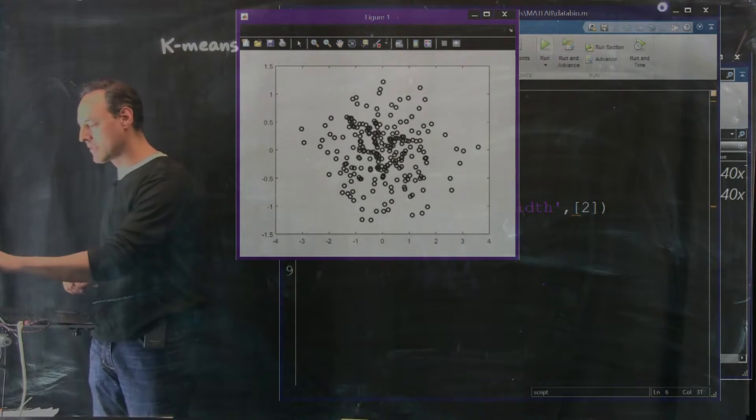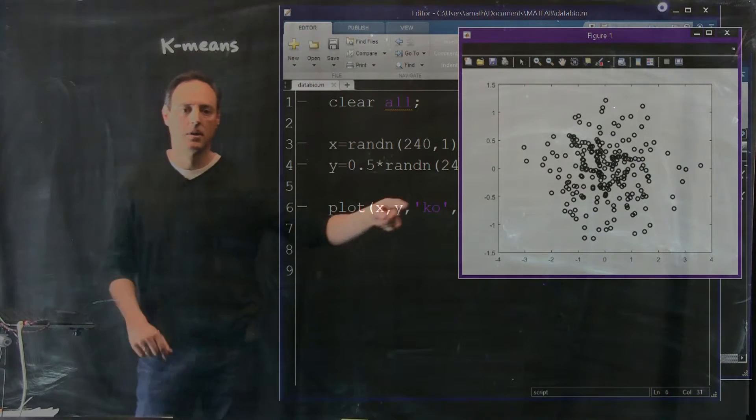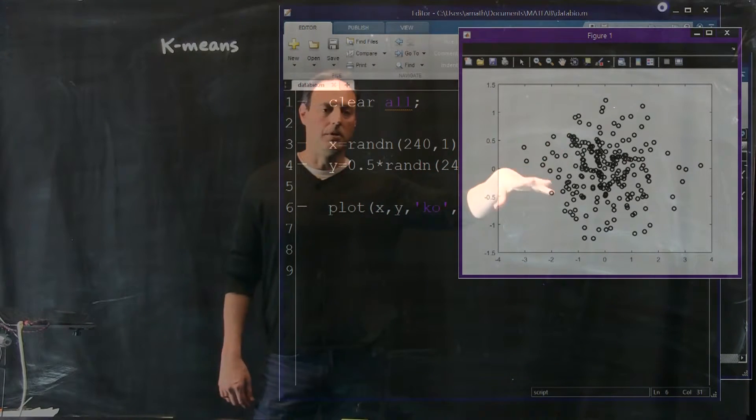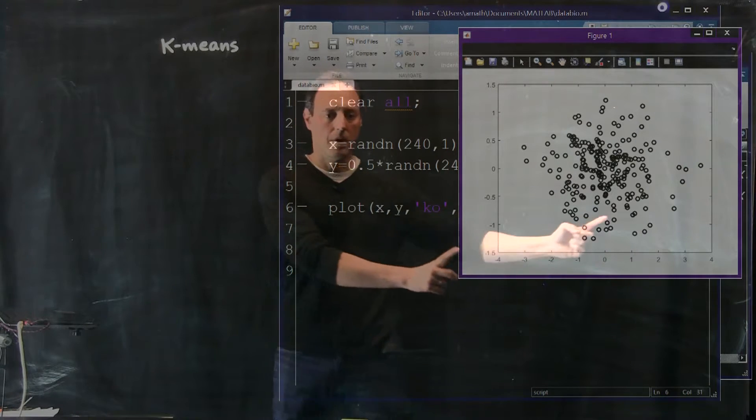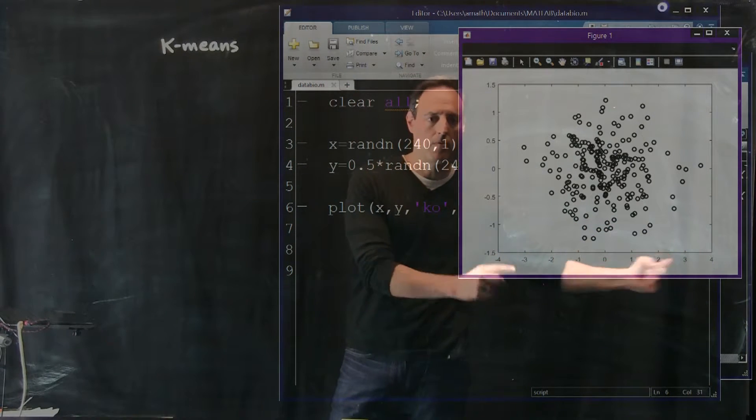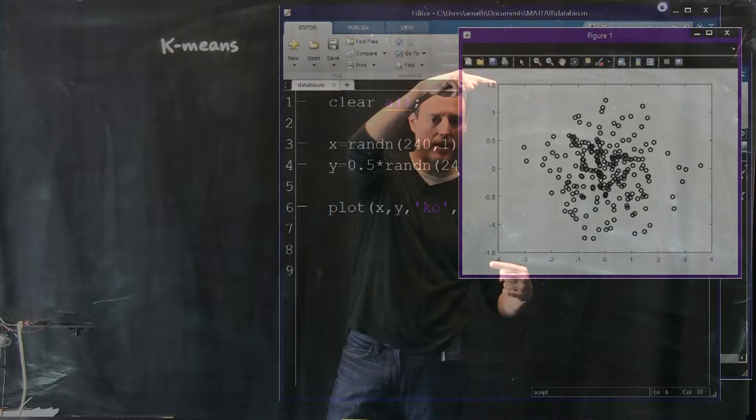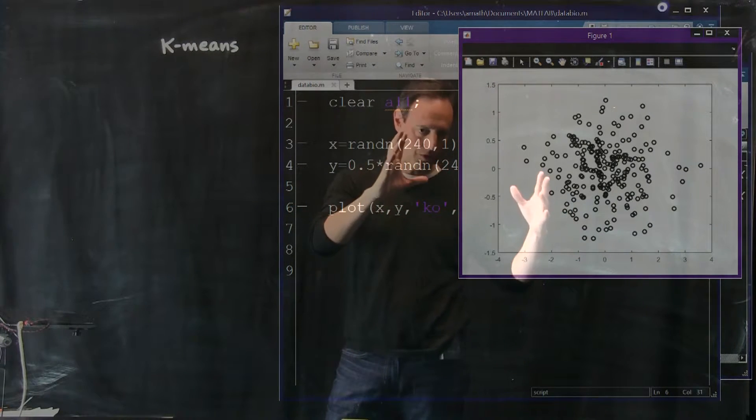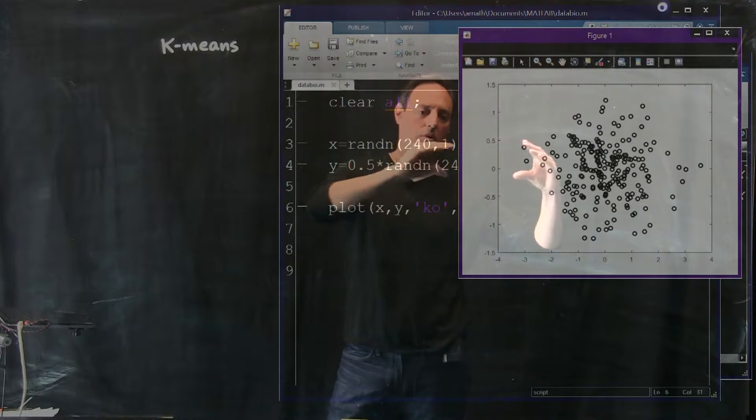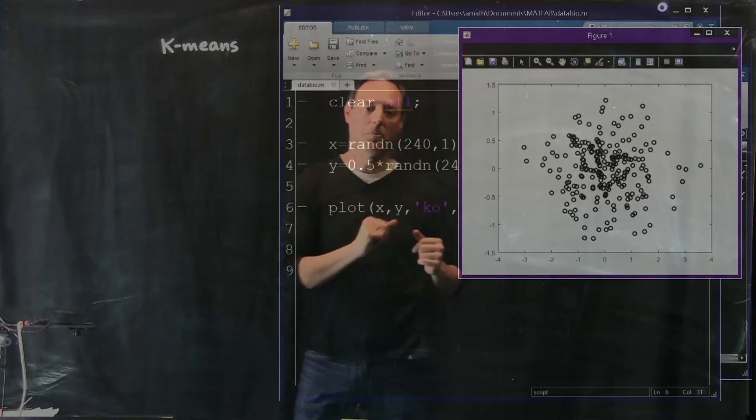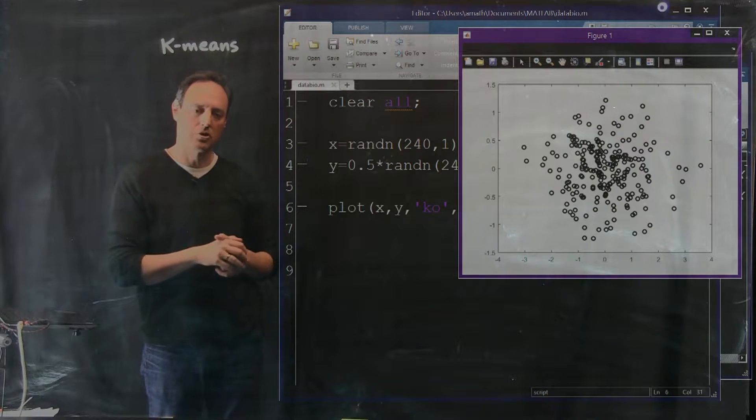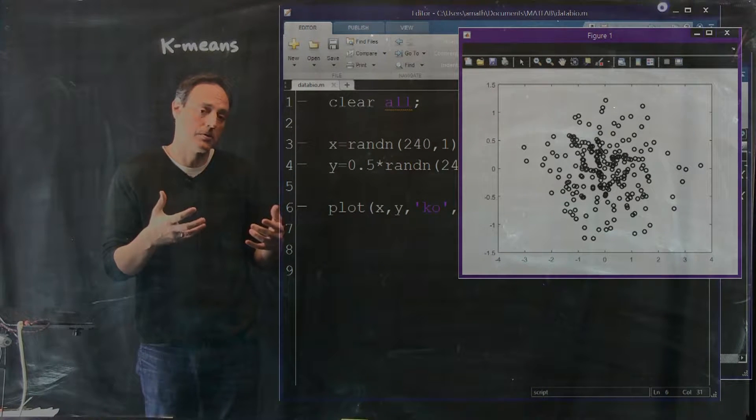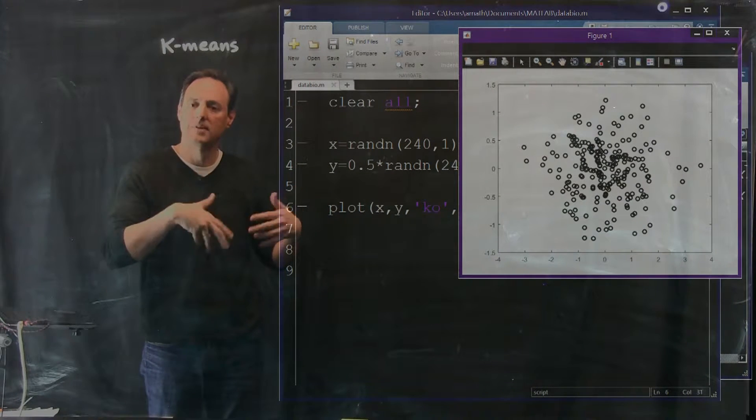Those are my x values. And my y values are going to be similar, but I'm going to make it a little bit narrower in the y direction. What I can do with this is just say plot x versus y, and let's make these with black squares, line width 2. Let me run this code, and there they are.